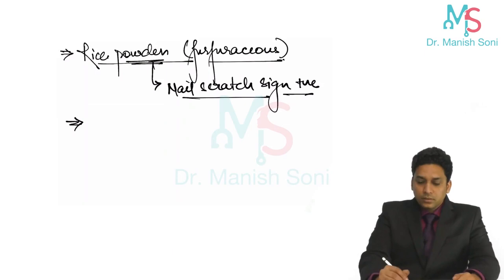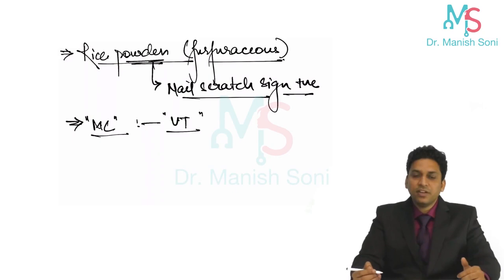The common site where these lesions are present are upper trunk. Generally the site involved is upper trunk, shoulders. Upper chest, upper back, shoulders. These are the common sites where the lesions of pityriasis versicolor occur.